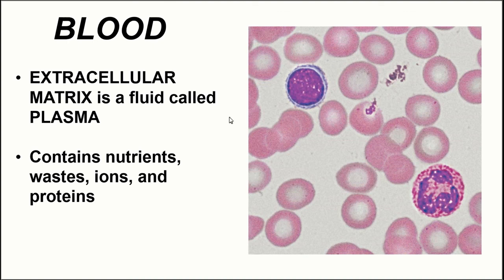What we don't see on this microscope slide is the extracellular matrix, which is a fluid called plasma — mostly water. The vast majority of plasma is water, but it also contains nutrients like glucose and amino acids, a number of wastes that are byproducts of metabolism, ions like sodium, potassium, and calcium, as well as proteins.